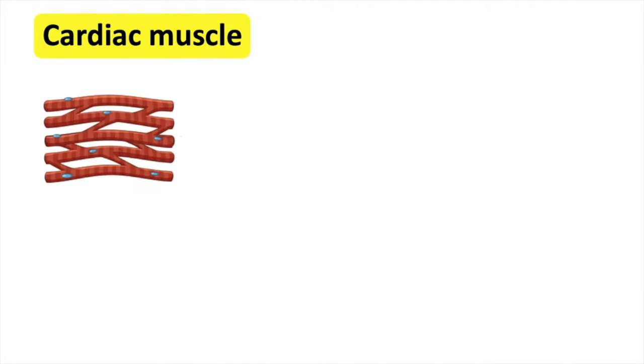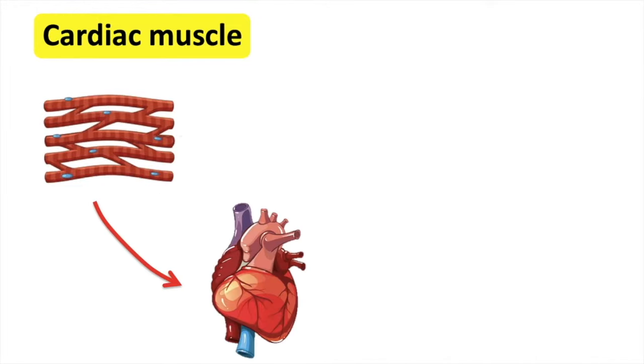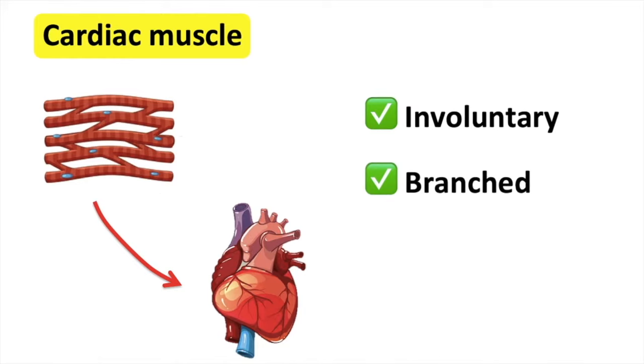Cardiac muscle is the muscle of the heart. This type of muscle is involuntary, so the movement is activated automatically by the body. Cardiac muscles are short and branched, and they're also striated.